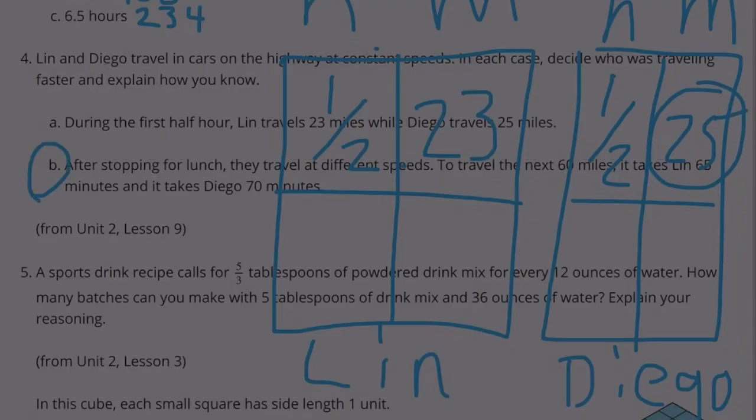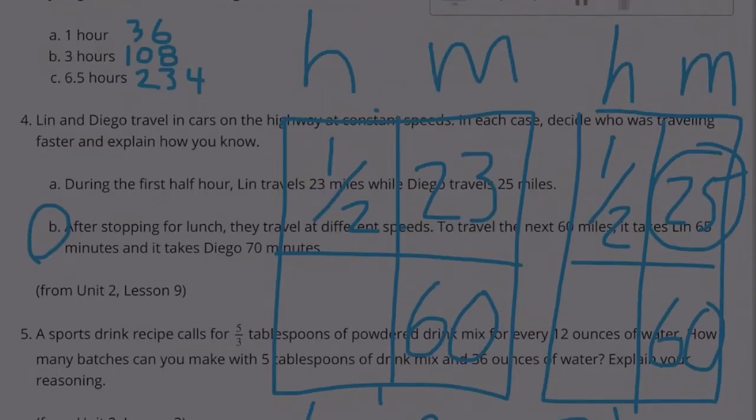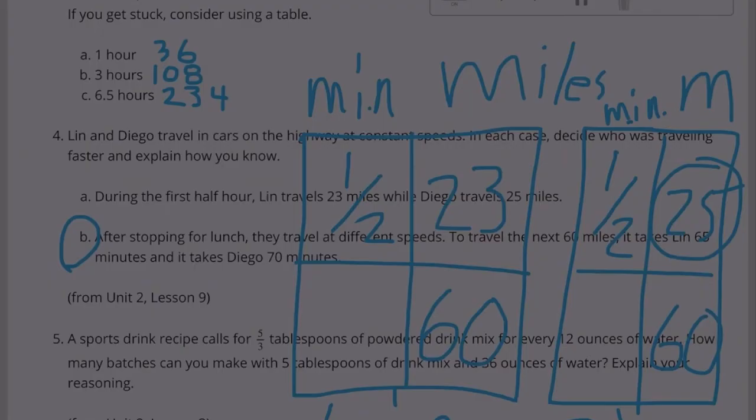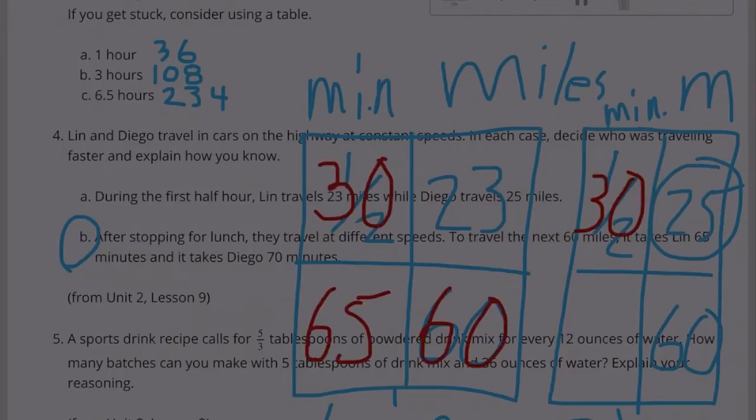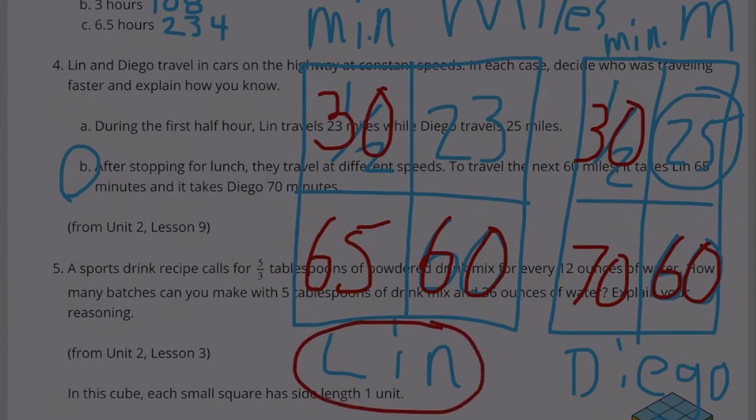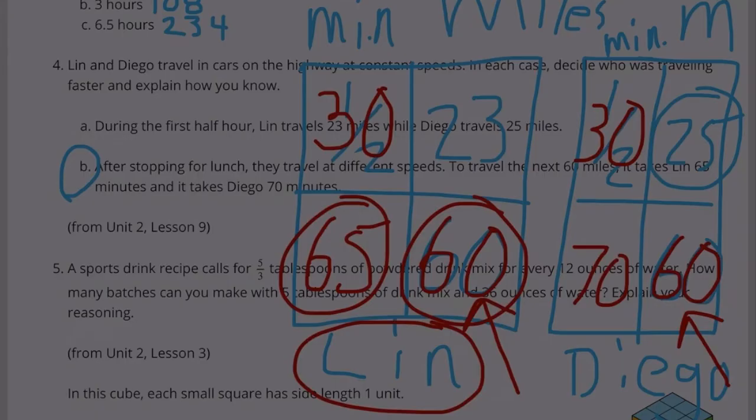Part B: After stopping for lunch, they traveled at different speeds. To travel the next 60 miles, it takes Lynn 65 minutes and it takes Diego 70 minutes. So they each traveled 60 miles, and they changed this from hours to minutes. I changed it in the graph from hours to minutes like they did, so the half hour becomes 30 minutes. Lynn takes 65 minutes to travel 60 miles, and Diego takes 70 minutes. So after lunch, Lynn was traveling faster because in a shorter amount of time, he traveled the same distance as Diego. It took Lynn only 65 minutes to travel 60 miles, and it took Diego 70 minutes.